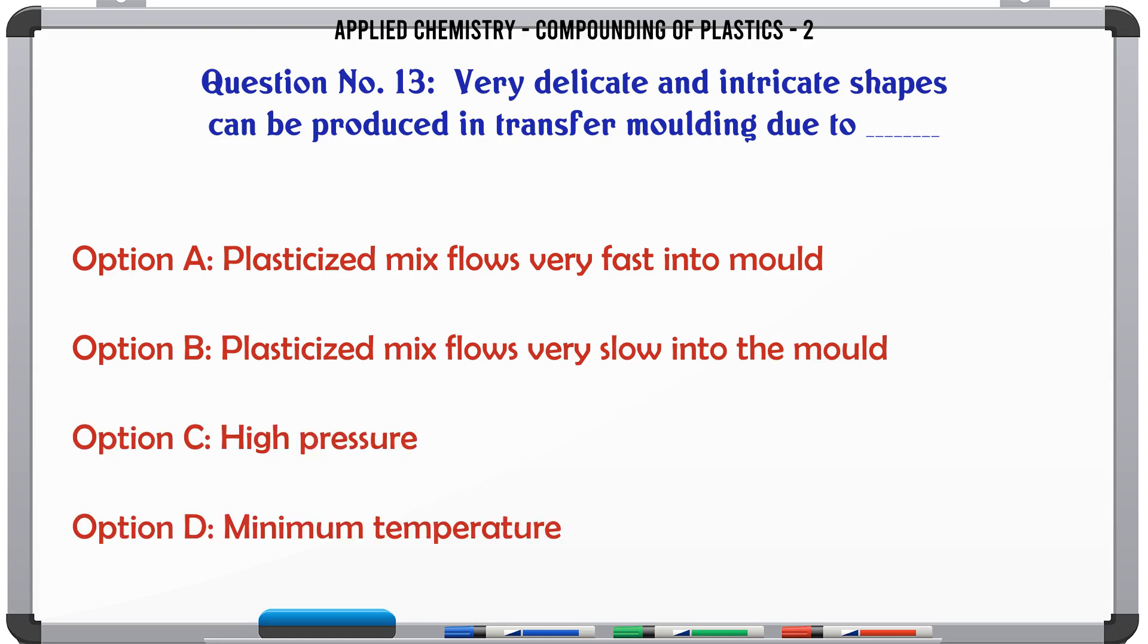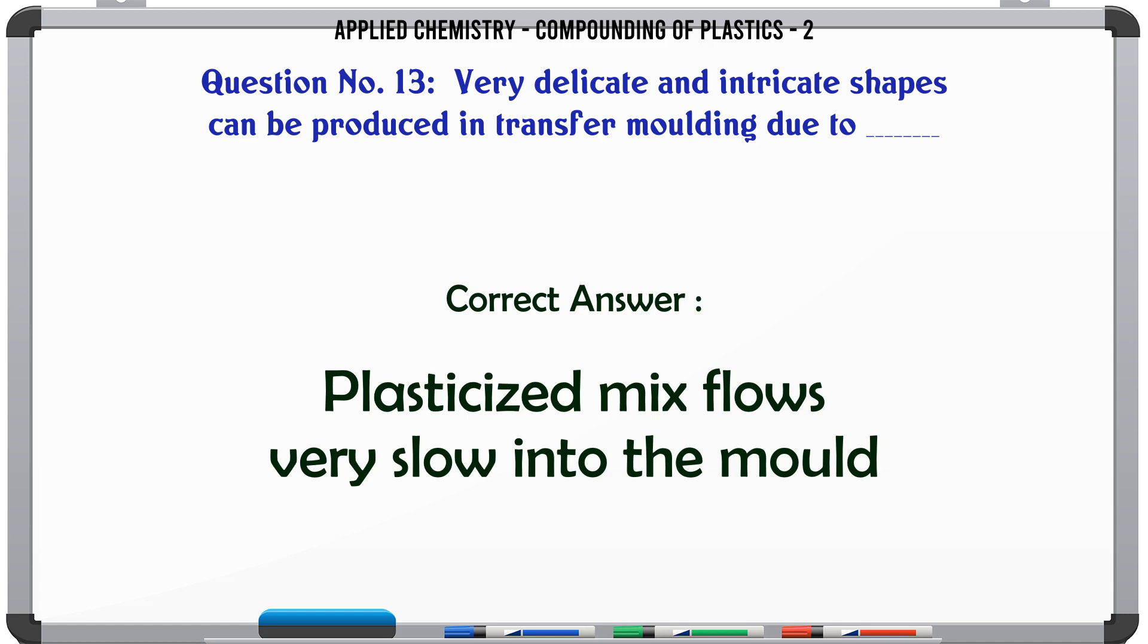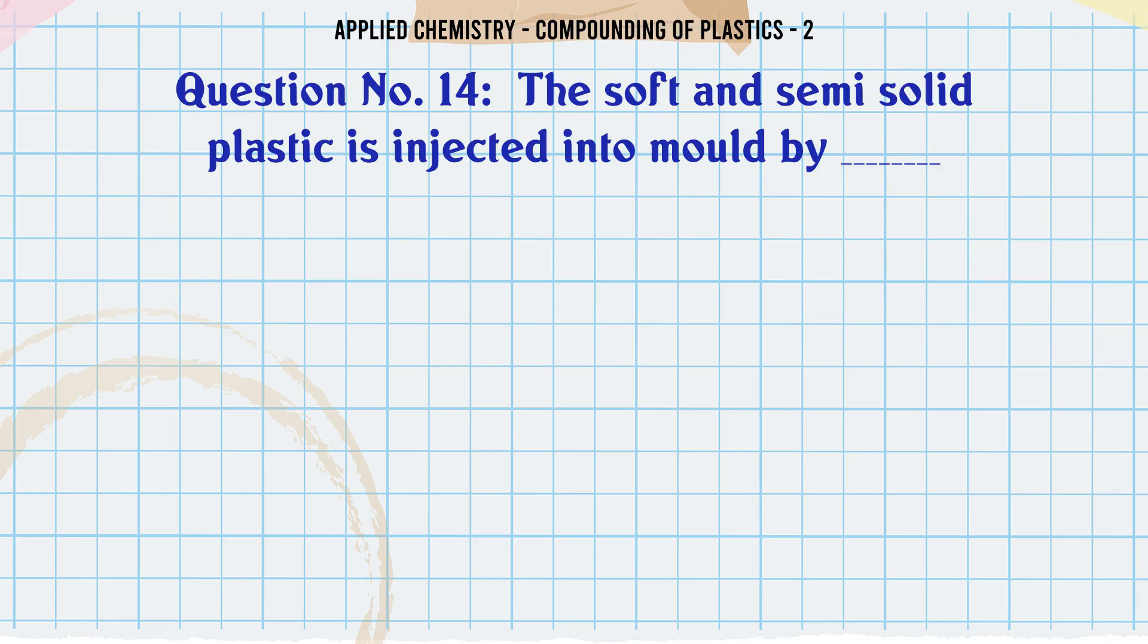Very delicate and intricate shapes can be produced in transfer molding due to A. Plasticized mix flows very fast into mold, B. Plasticized mix flows very slow into the mold, C. High pressure, D. Minimum temperature. The correct answer is Plasticized mix flows very slow into the mold.